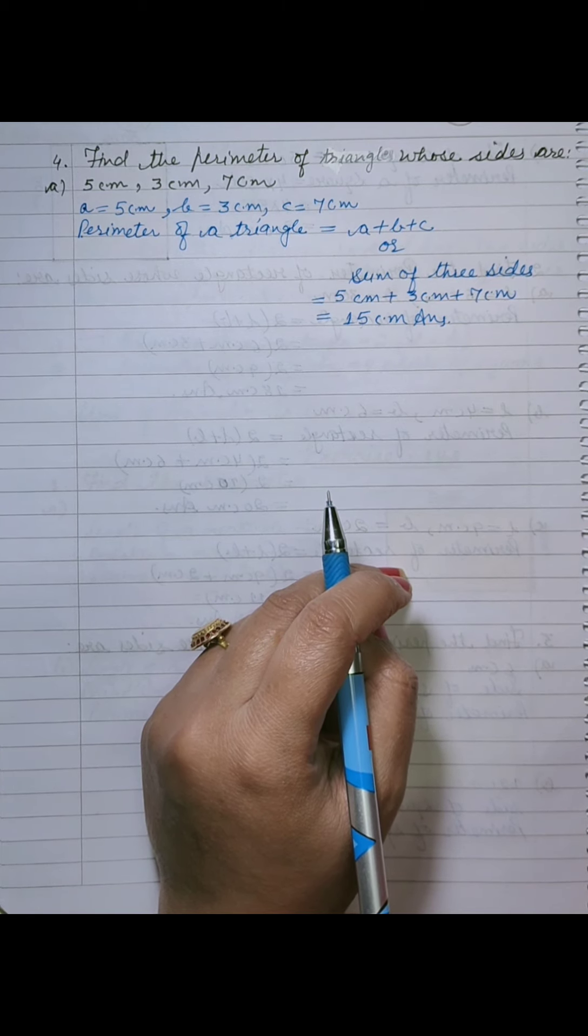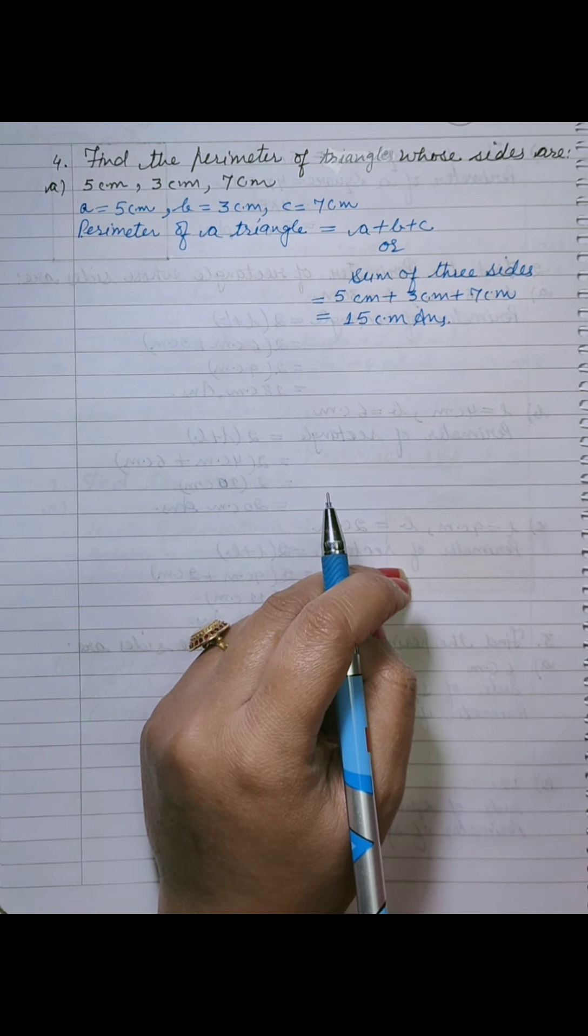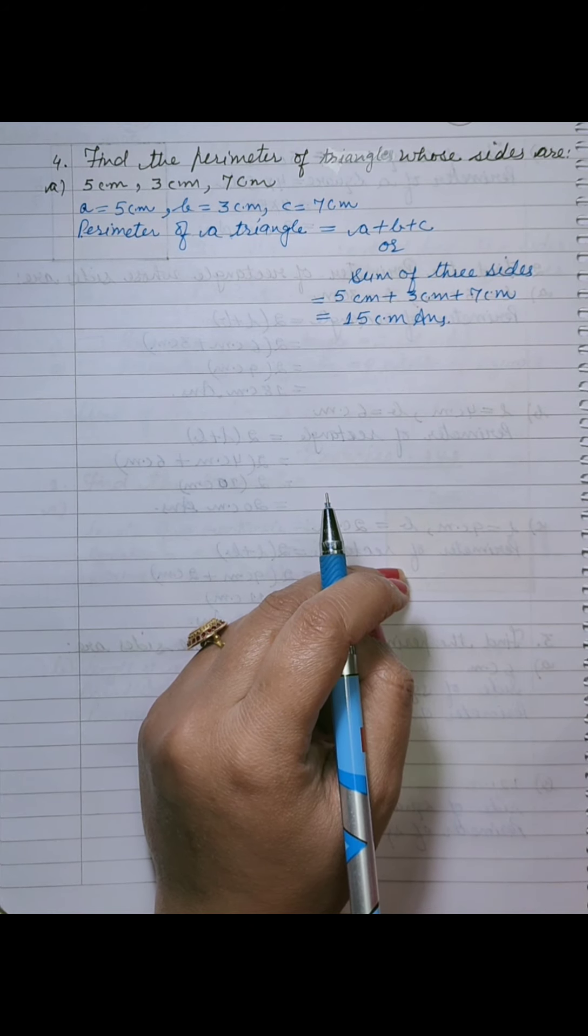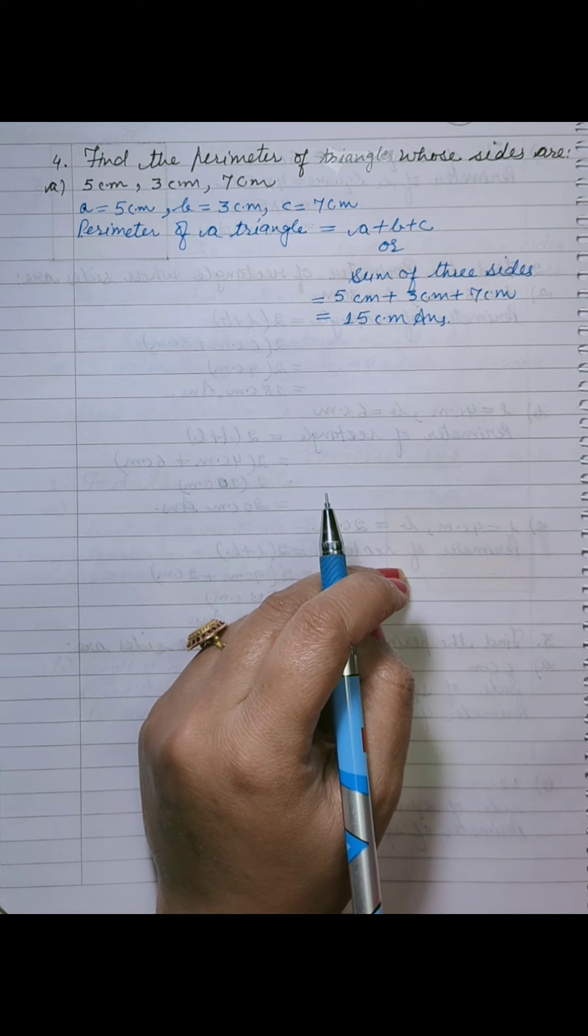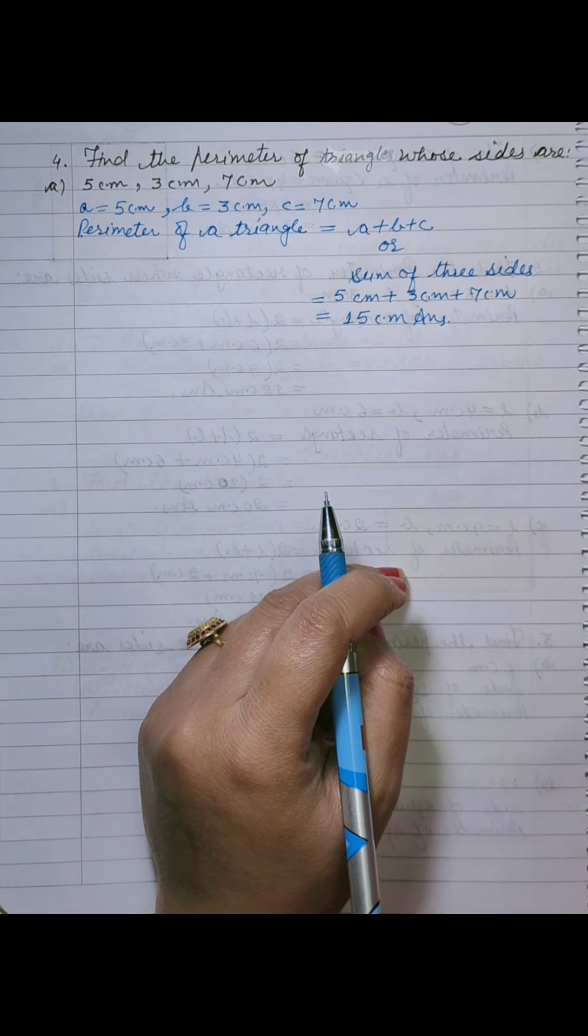Lekin, triangle 3 types ki hota hai. Equilateral, jis mein sabhi sides equal hota hai. Isosceles, jis ki 2 sides equal hota hai. Scalene, jis ki 3 sides different hota hai. Right? Uske according hi hamare paas 3 formulas hota hai, triangle ka bhi.